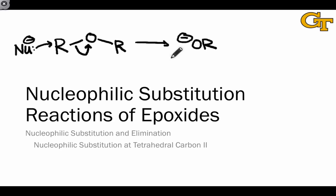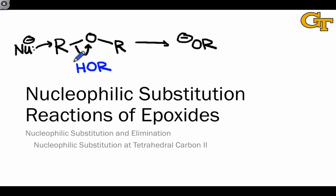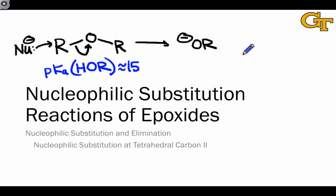To prove this, we only need to think about pKa values. Keep in mind our criterion for what makes a good leaving group: a pKa of the conjugate acid of the leaving group less than zero. What's the pKa of the conjugate acid of an alkoxide? That is, an alcohol. It's way above zero — it's on the order of 15. And so alkoxide and the analogous hydroxide are poor leaving groups.